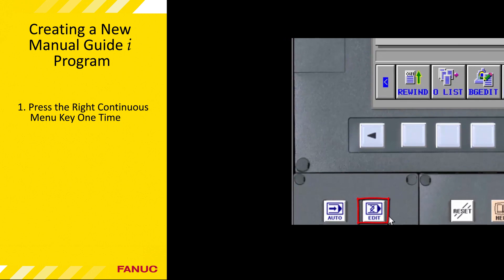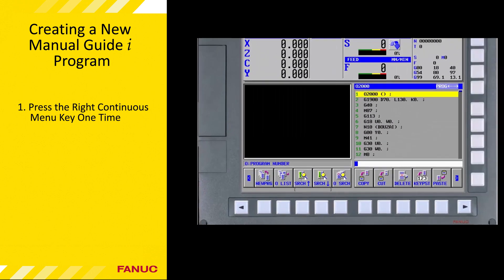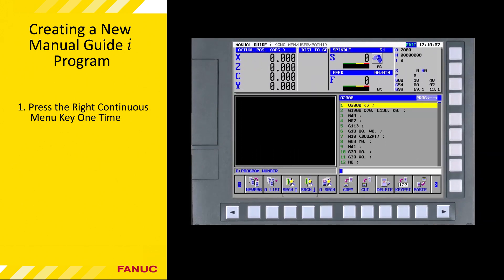With NC Guide, edit mode is to be selected using the mini operator panel at the bottom left of the screen. Begin by selecting edit mode. You can confirm that the CNC is in edit mode by looking at the mode status display in the top right of the Manual Guide i all-in-one screen.